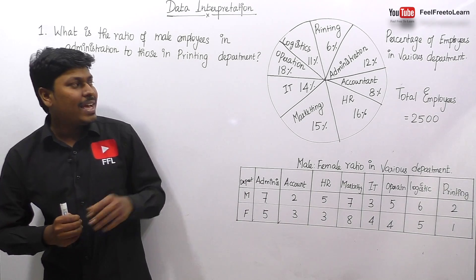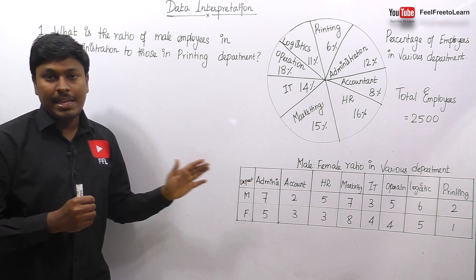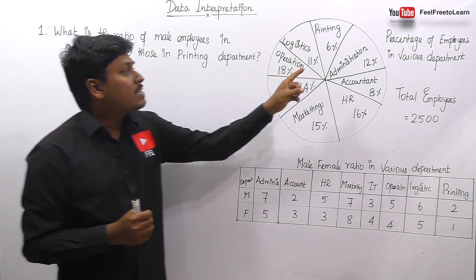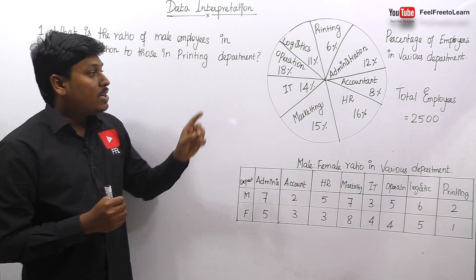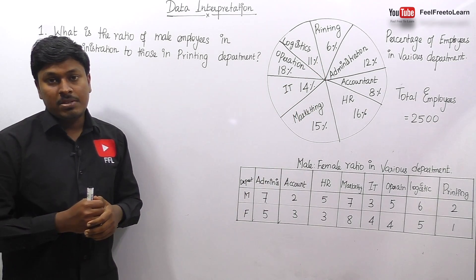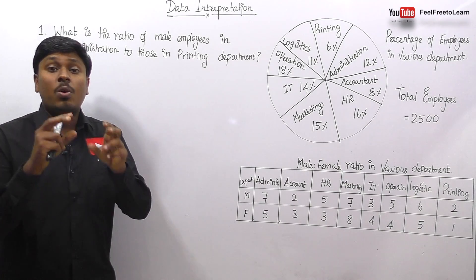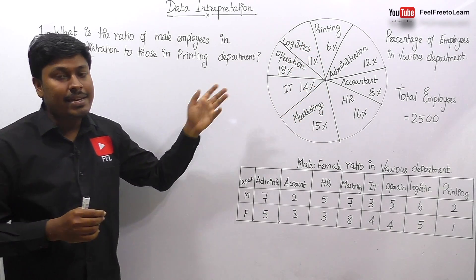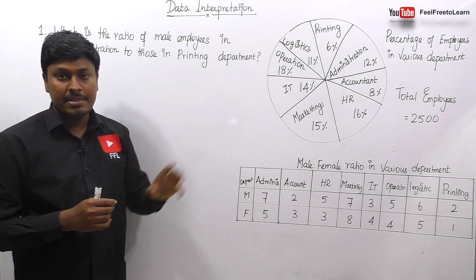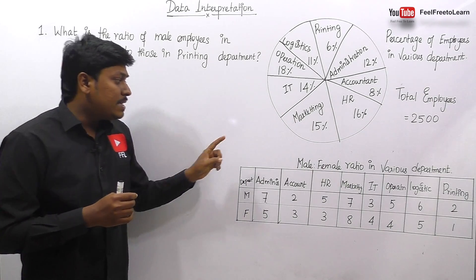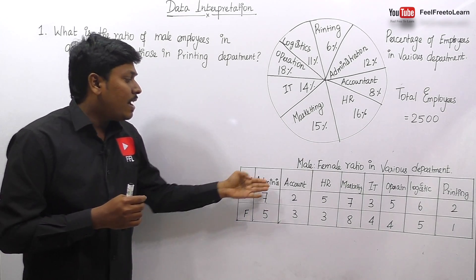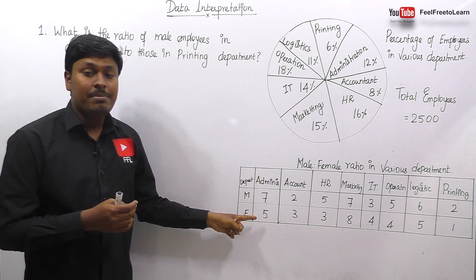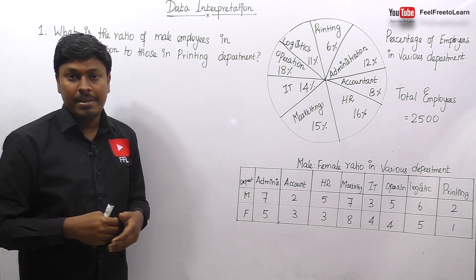They have given a pie chart and also a table chart. In the pie chart, there are Administration, Accountant, HR, and other departments, with the percentage of employees in various departments. The total number of employees is 2500. These 2500 employees are categorized into departments: Printing, Administration, Marketing, IT, and HR. All values are given as percentages. The table chart shows the male-to-female ratio for each department. For Administration, male is 7 and female is 5, so a 7:5 ratio.